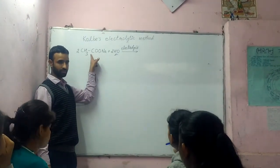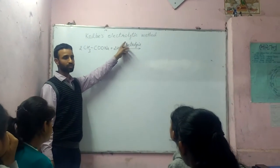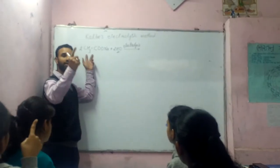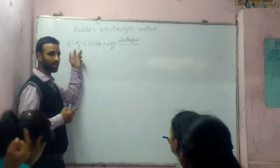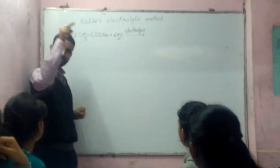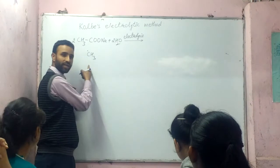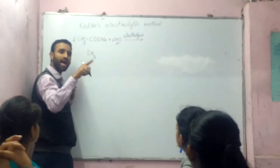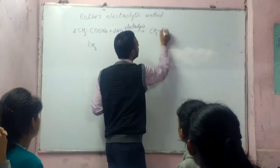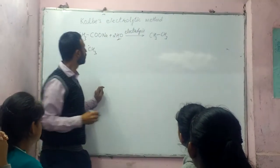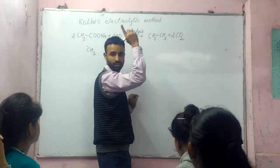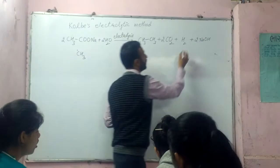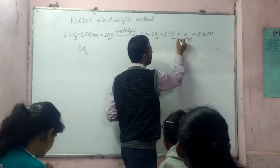For example, sodium acetate: it has CH₃ as the R group. When the CH₃ free radical is formed, it combines with another CH₃ free radical to give ethane (CH₃CH₃). The mechanism produces ethane along with two molecules of carbon dioxide, H₂ gas at the cathode, and two molecules of NaOH in solution. The CO₂ is formed at the anode.